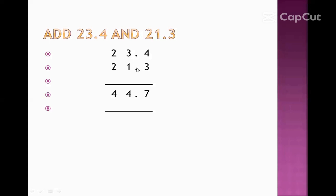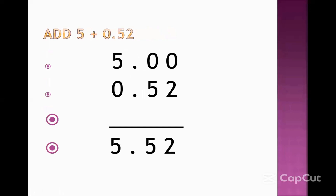After the decimal point we have the number 3, so we write 3 here. Then we have 21, so we write 1 under 3 and 2 under 2. Now we add: 4 plus 3 equals 7, 3 plus 1 equals 4, and 2 plus 2 equals 4. So the result is 44.7.